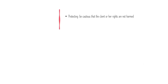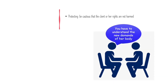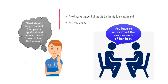Next is Protecting. We need to protect our client. While performing the above procedures, we must be cautious that our client or her rights are not harmed. For example, while counselling the family, we should be careful enough to teach them the new demands on the body and mind of our client that have come with her being a mother — make them understand and see to it that it doesn't backfire on the client. Preserving Dignity — every human has her own dignity, and while the whole process is going on, we should see that everyone's dignity is maintained.